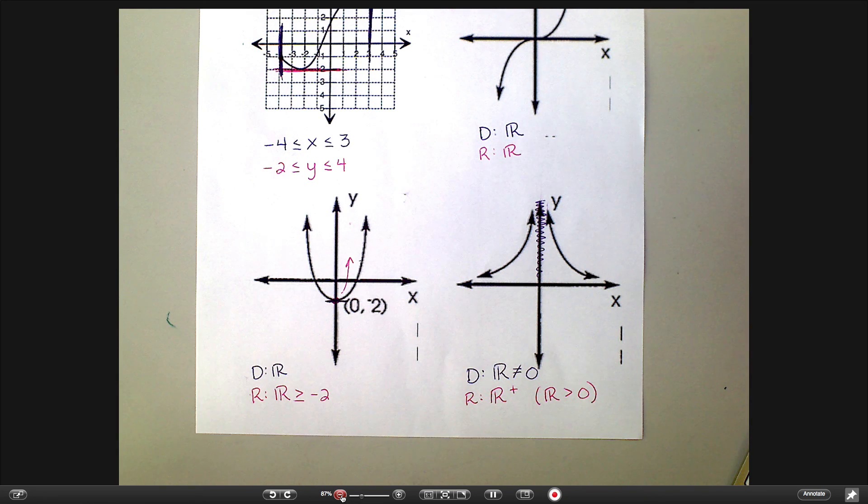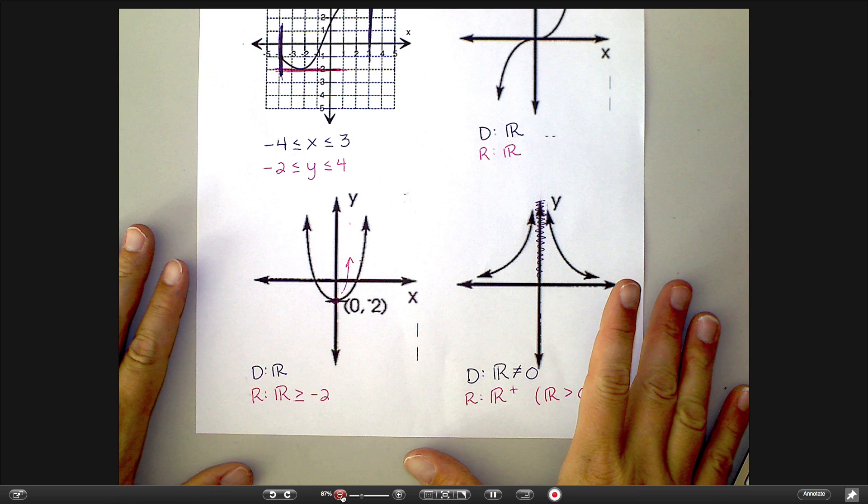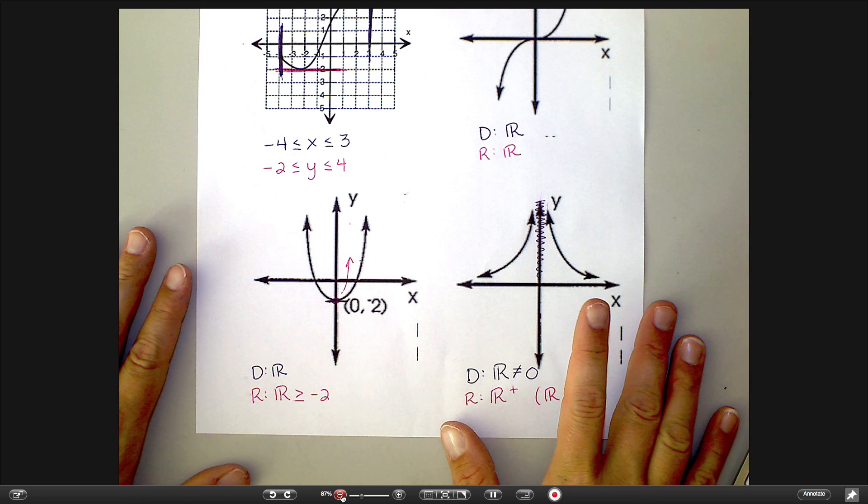So, you do have part of your homework assignment is from the textbook. Part of your homework assignment is a worksheet on domain and range. I want you to take what you've used here and give that worksheet your best shot. And then we'll be going over that in class tomorrow.